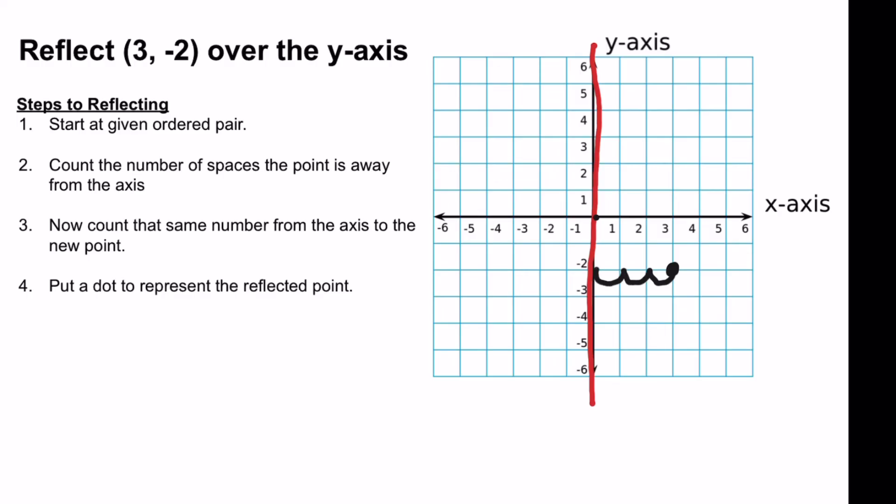1, 2, 3 spaces away. And so now let's go to the other side, 3 spaces. 1, 2, 3. We're going to put a point here. And this represents the reflected point.